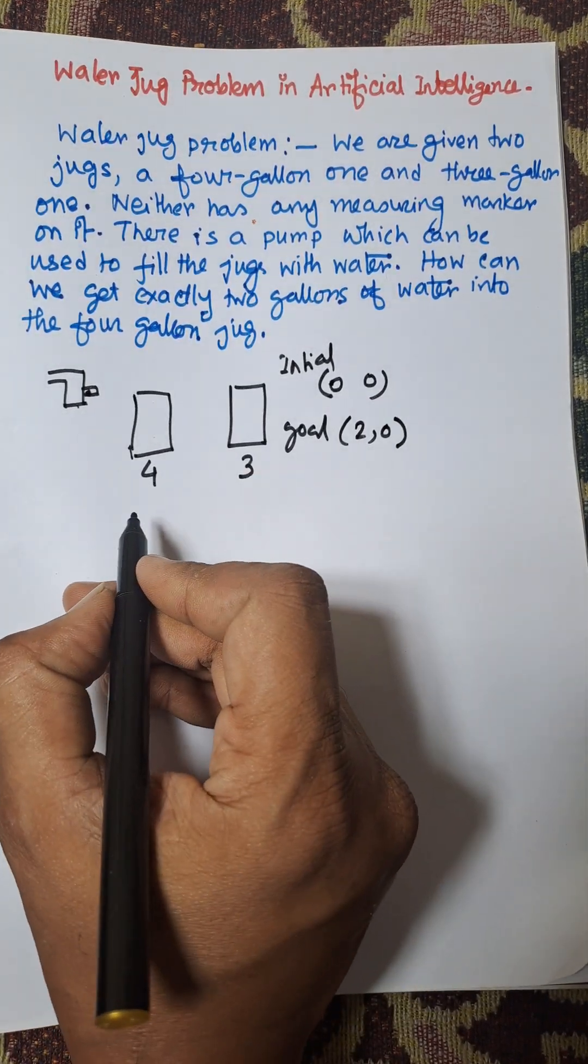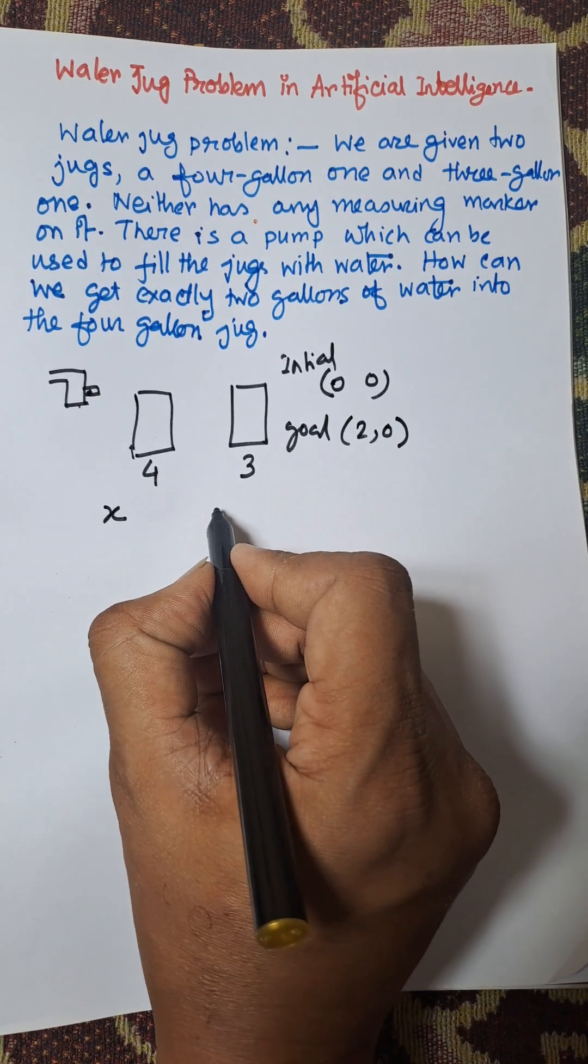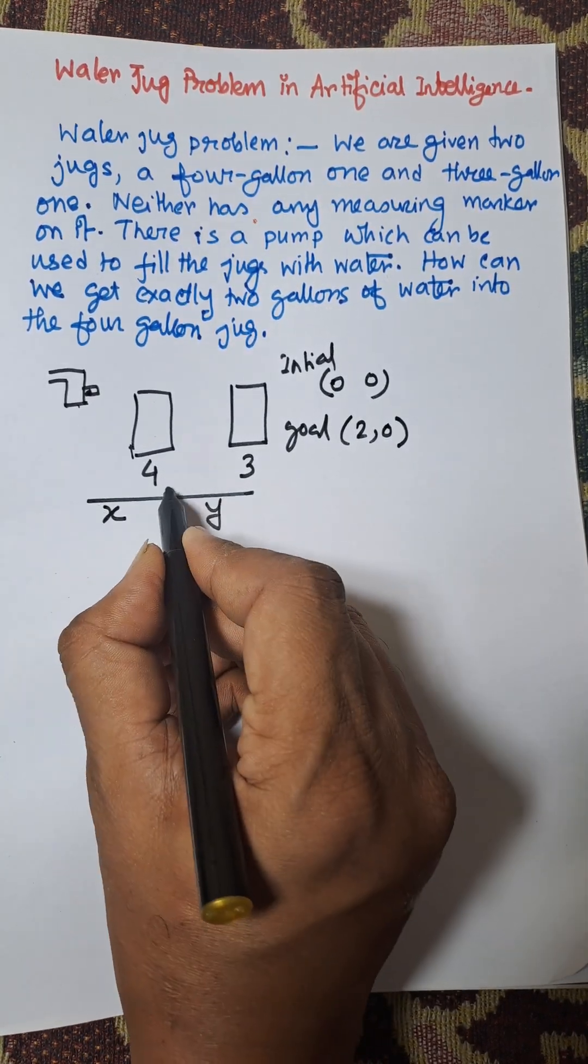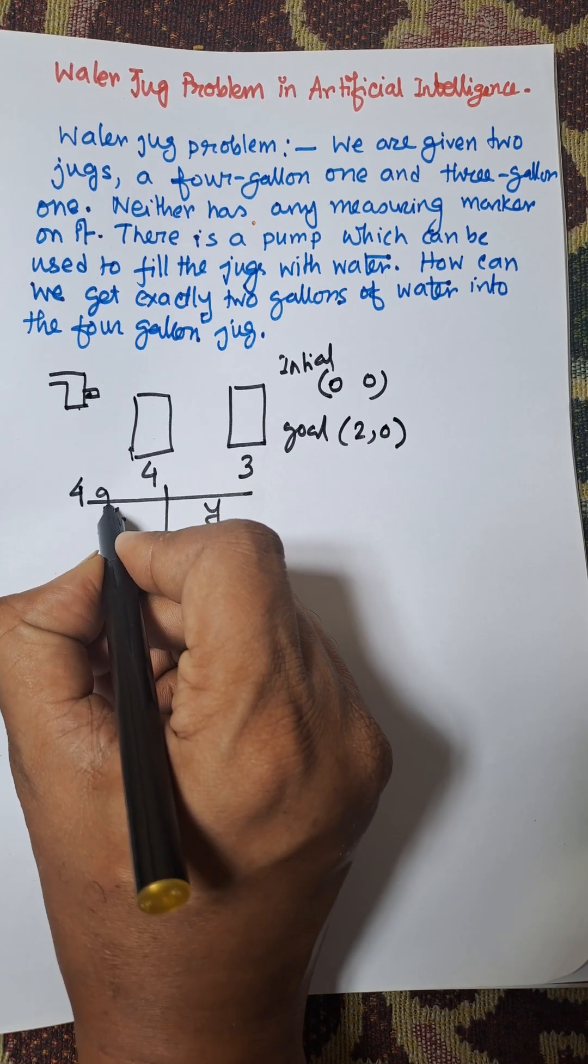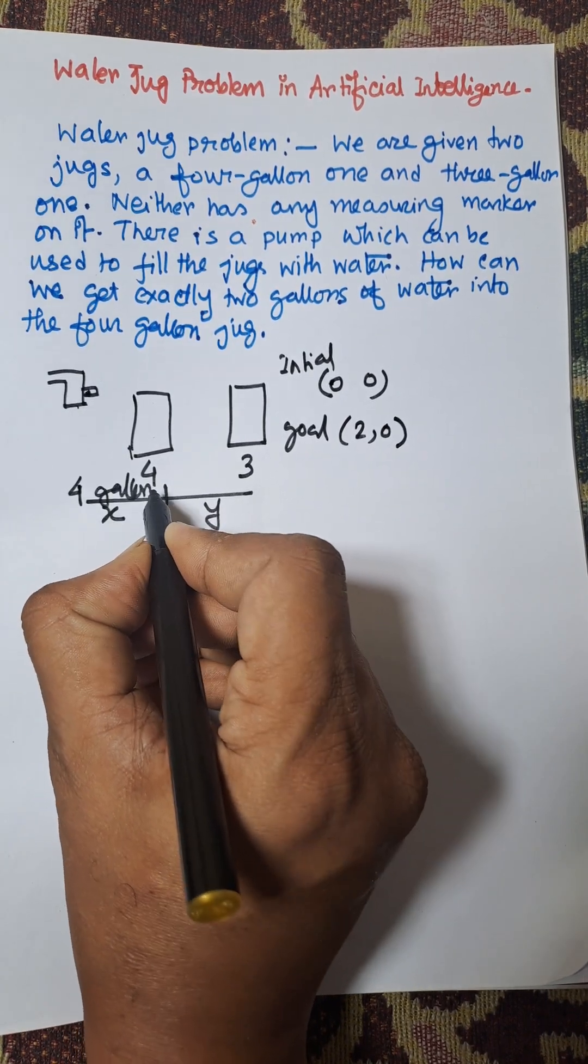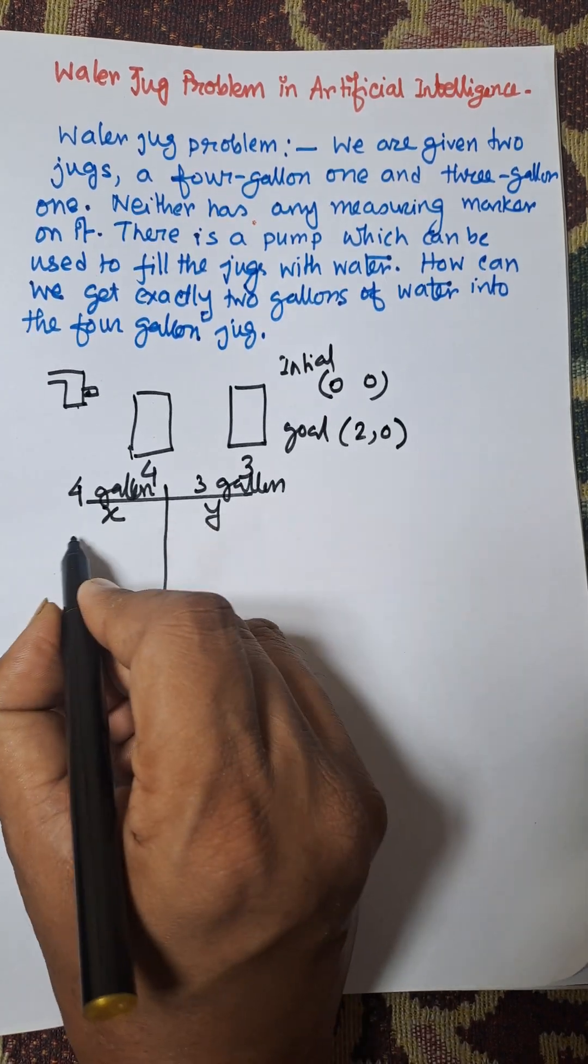First of all, consider the water in the 4-gallon jug as X and the water in the 3-gallon jug as Y. These are the variables - X and Y for the 4-gallon jug and 3-gallon jug.